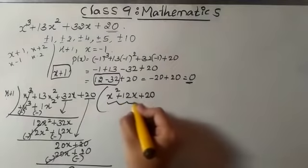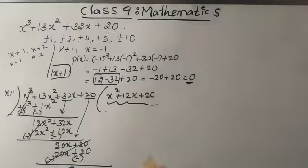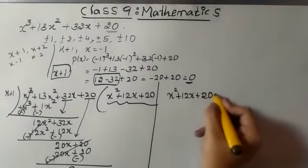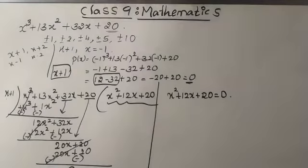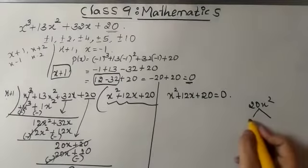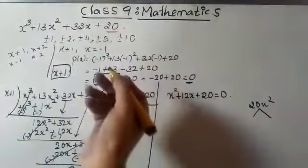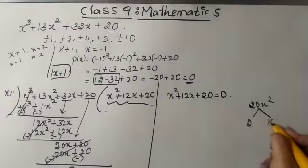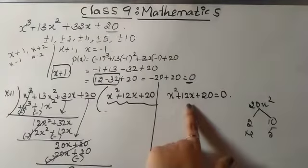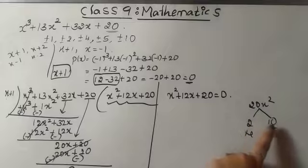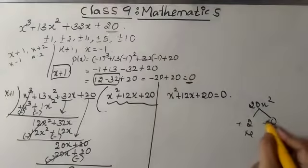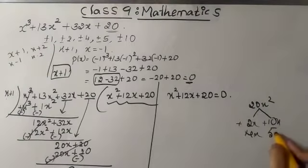The quotient from the long division is x squared plus 12x plus 20. Setting x squared plus 12x plus 20 equal to 0, I need to factor it. The product is 20 and I need factors that add to 12. That is 2 and 10, since 2 times 10 is 20 and 2 plus 10 is 12. So I split 12x as plus 2x plus 10x.